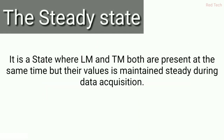Steady state is a state where LM and TM are both present at the same time. LM means longitudinal magnetization and TM means transverse magnetization. Both are present during data acquisition — that state is called the steady state, where both longitudinal magnetization and transverse magnetization appear to exist at the same time.